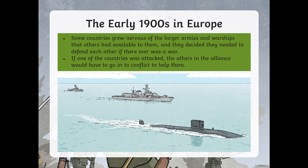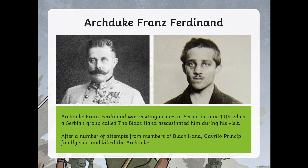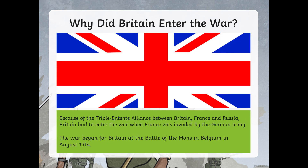Some countries grew nervous of the larger armies and warships that other countries had, and decided they needed to defend each other if there was going to be a war. If one of the countries were to be attacked, the others in the alliance would have to go into conflict to help them. Archduke Franz Ferdinand was visiting armies in Serbia in June 1914 when a Serbian group called the Black Hand assassinated him. After a number of attempts, a man called Gavrilo Princip finally shot and killed the Archduke. Because of the Triple Entente alliance between Britain, France and Russia, Britain had to enter the war when France faced the German army. The war began for Britain at the Battle of Mons in Belgium in August 1914.